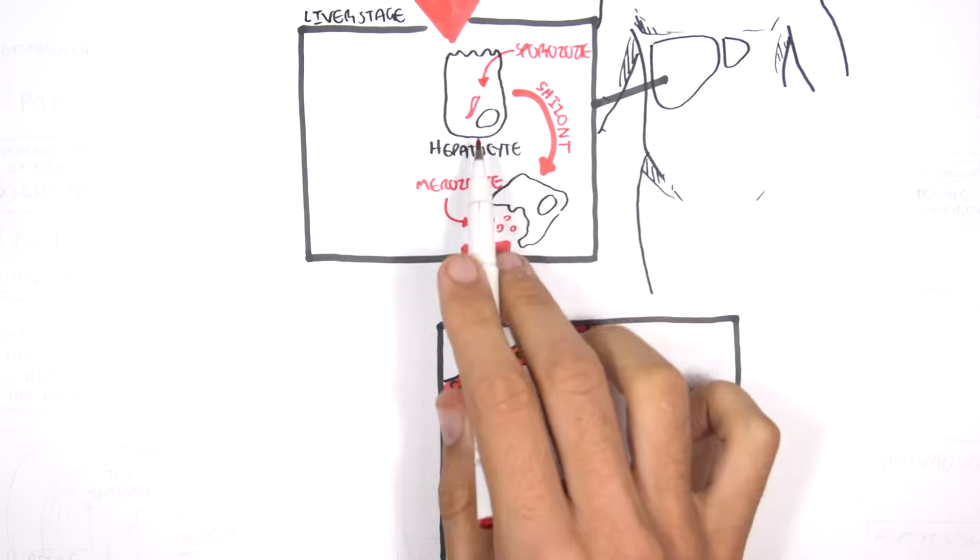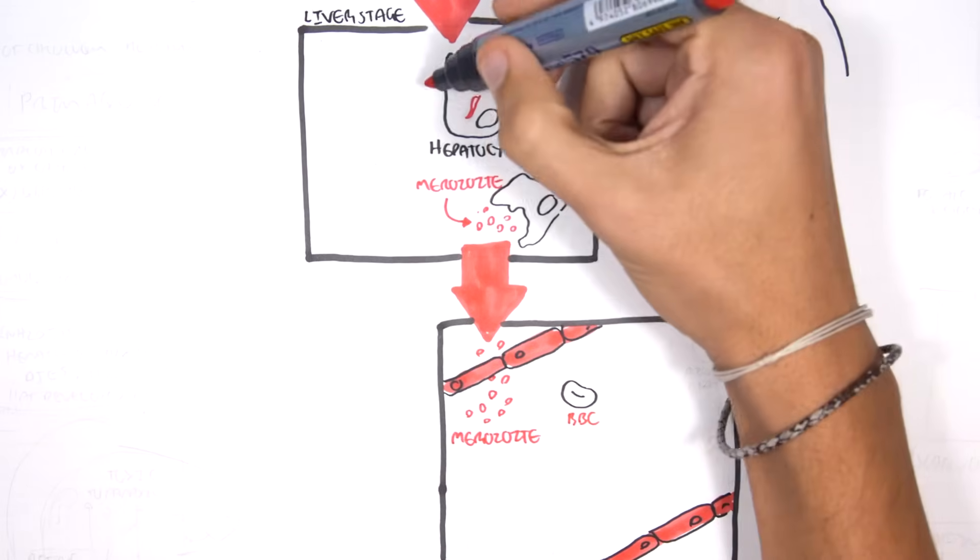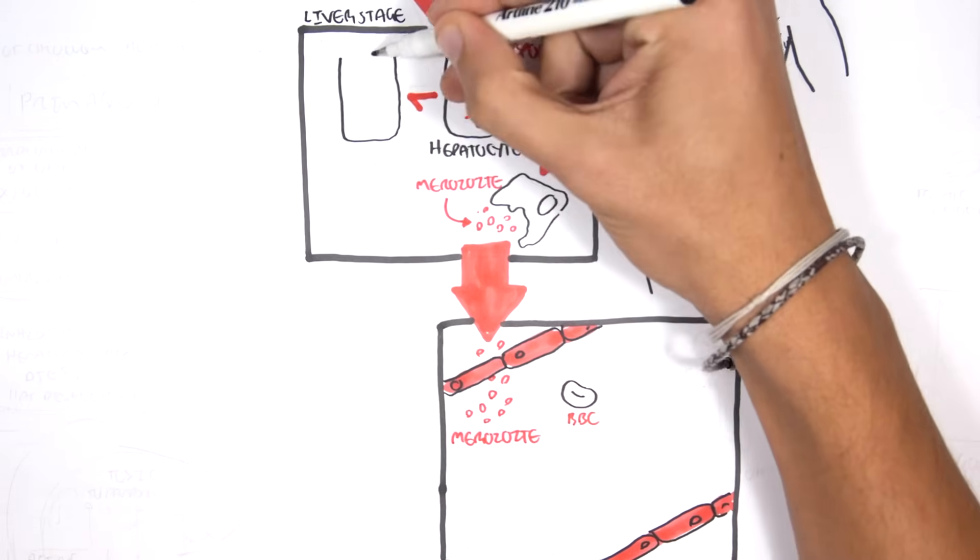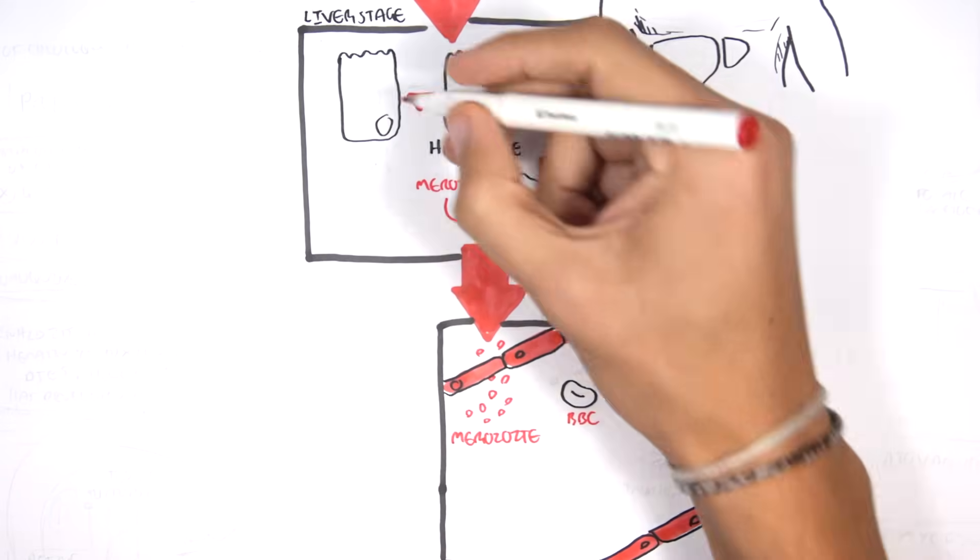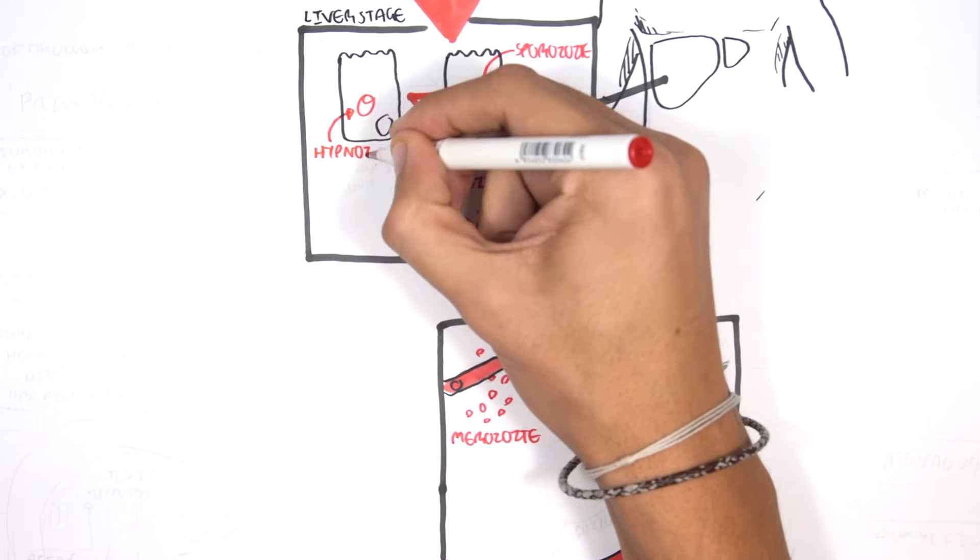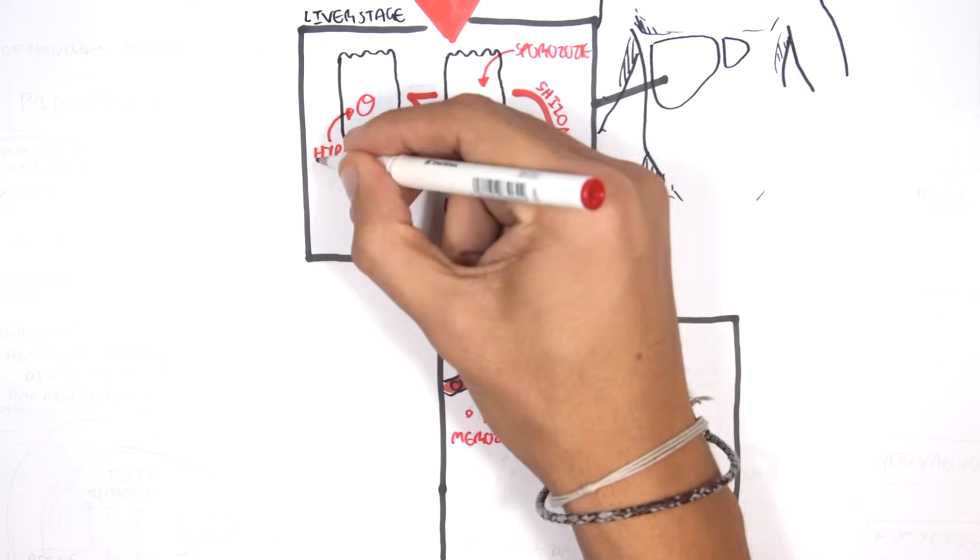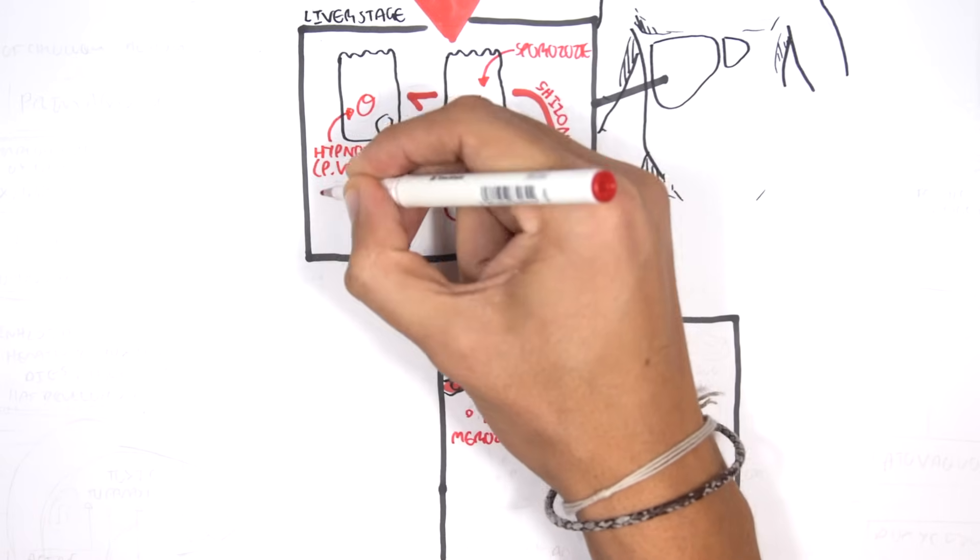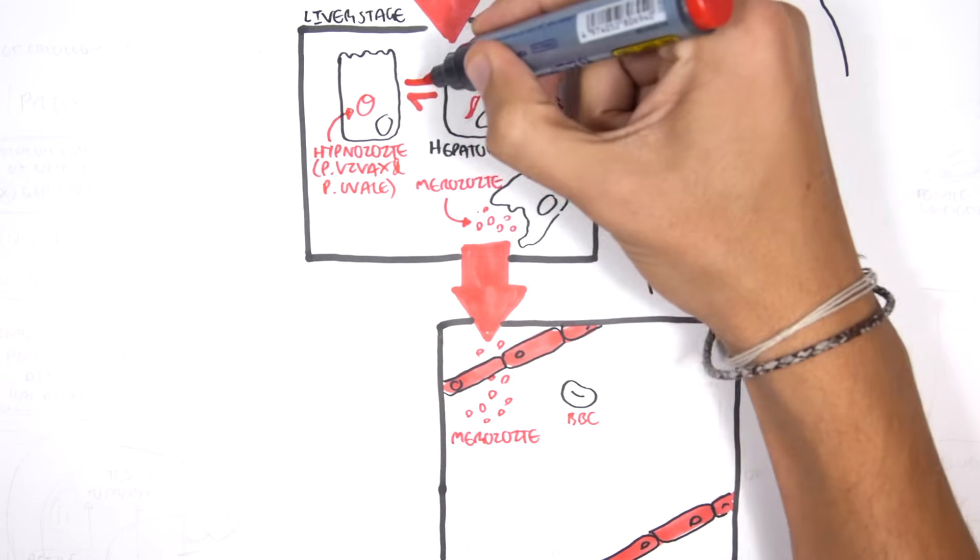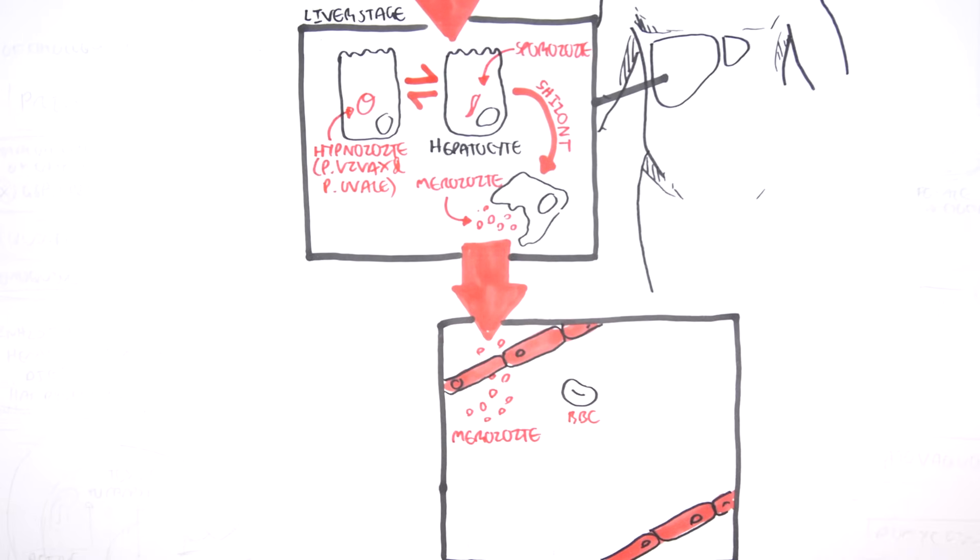For example, the plasmodium ovale and vivax sporozoids have the ability to remain dormant in the hepatocytes and form what's called a hypnozoite. And after many months or years, it will then replicate and then release its merozoites into circulation.